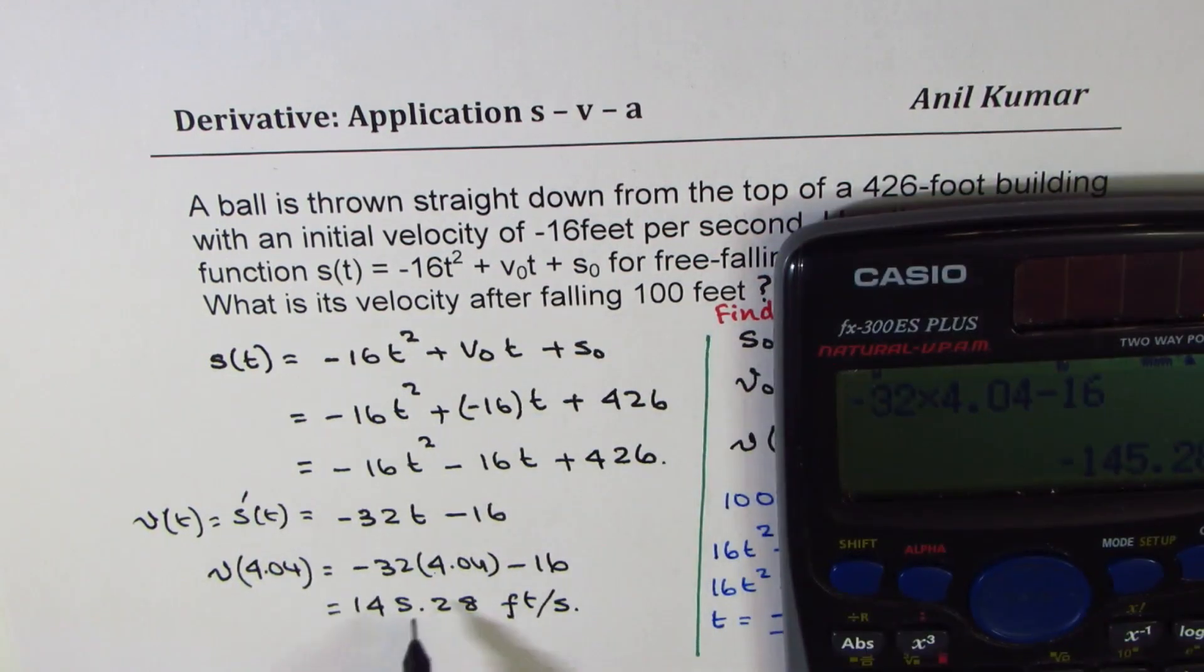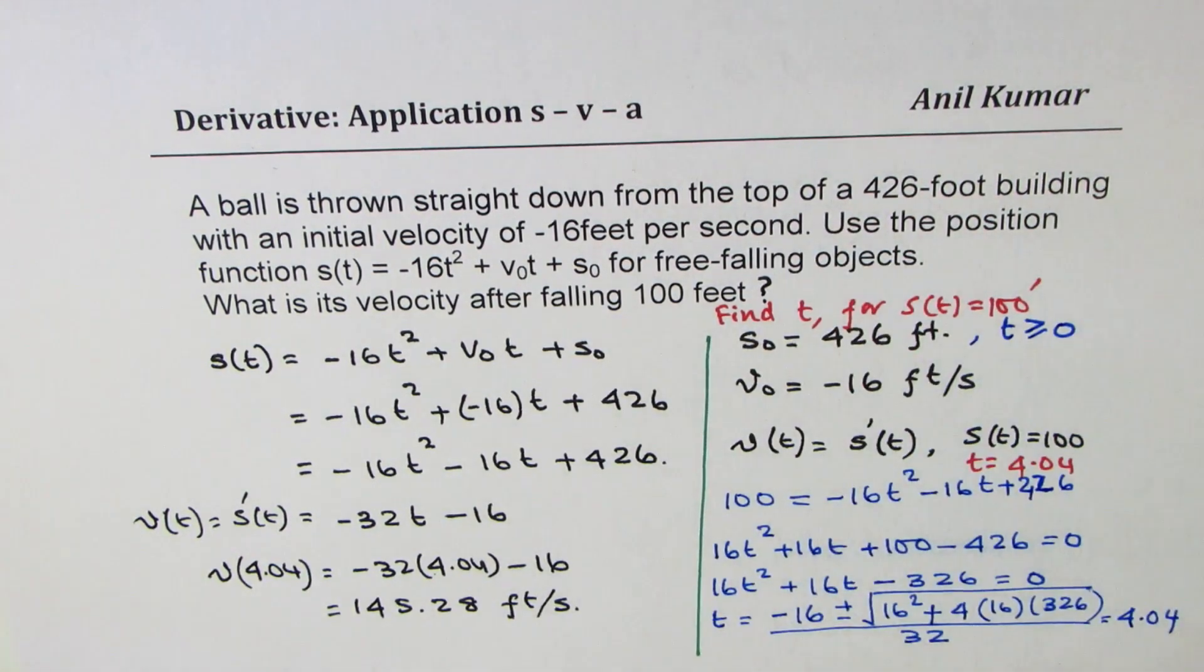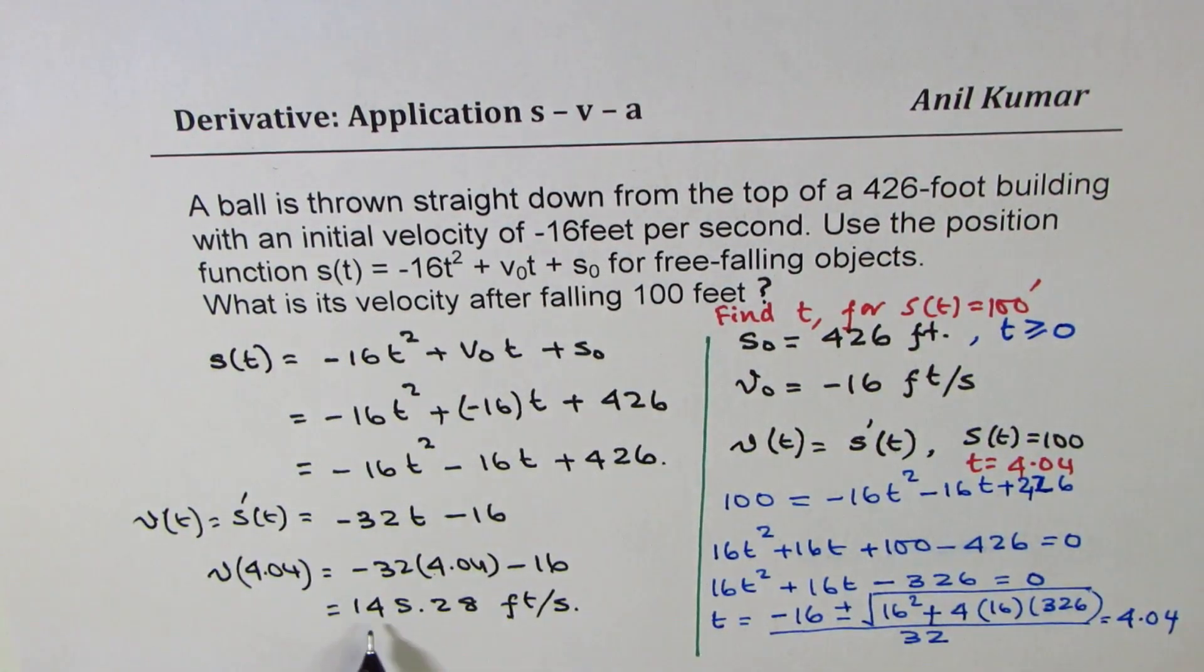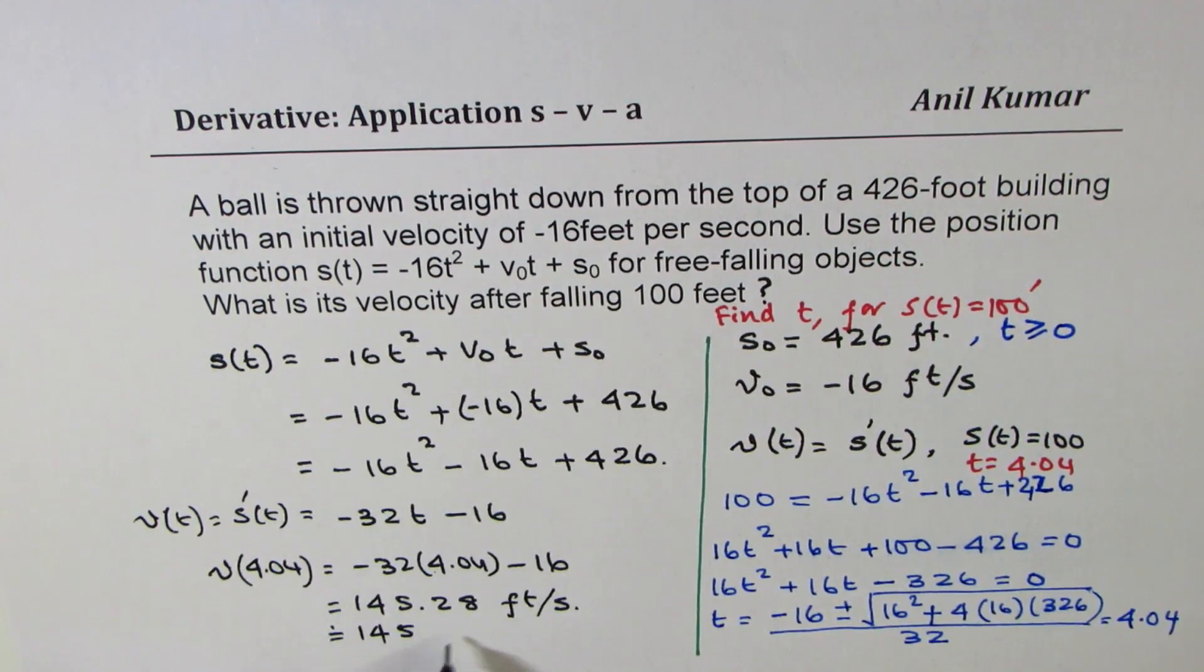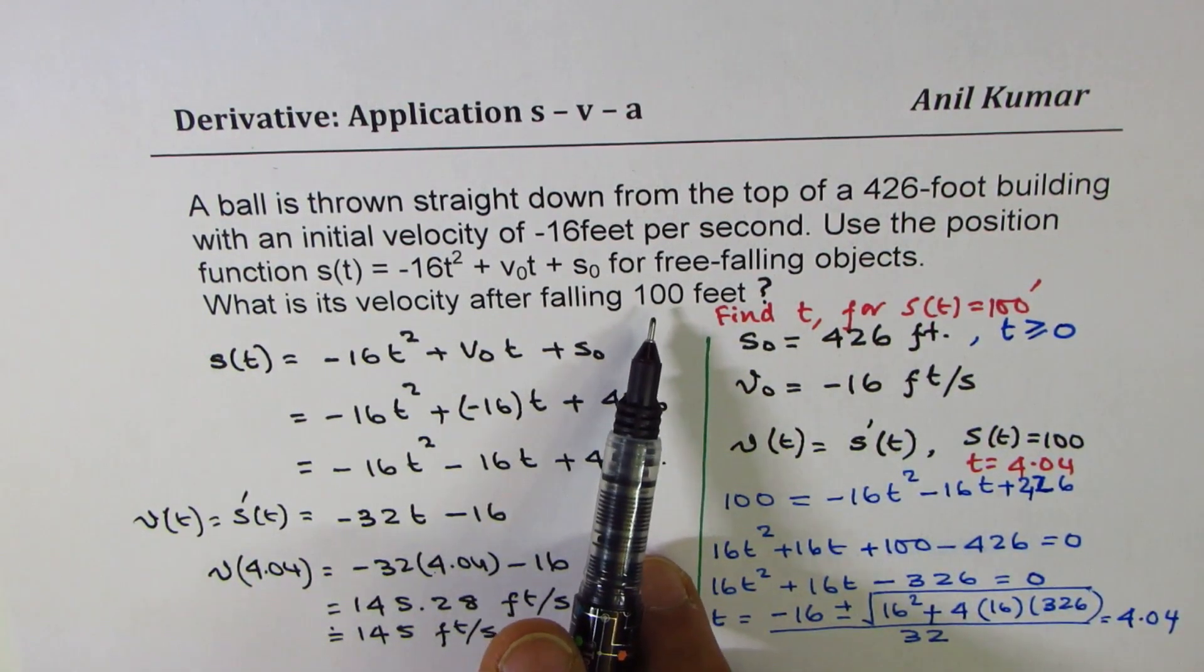You could do with 4 also. Sometimes we just use round values. So times 4. And then we will add 16 and put positive value, which is 144. So if you use just 4, you will get 144. So that, but truly 145, you could say approximately 145 feet per second is the velocity when the height of the object is 100 feet.